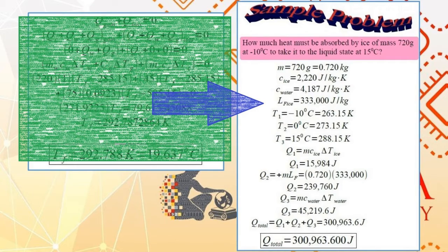We have specific heat of ice, specific heat of water, and heat of fusion of ice. As mentioned before, it is advisable that you memorize these values. As you can see, these values are not mentioned by the problem. Specific heat of ice is 2,220 joules per kilogram Kelvin. Specific heat of water is 4,187 joules per kilogram Kelvin. And heat of fusion of ice is 333,000 joules per kilogram.